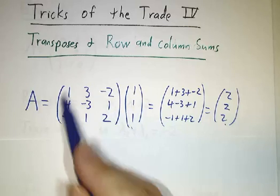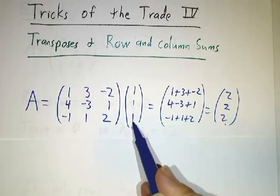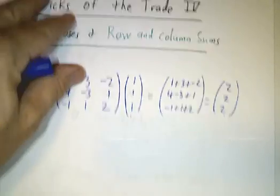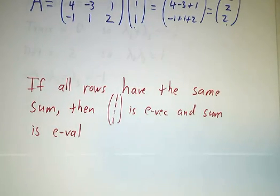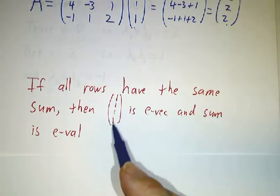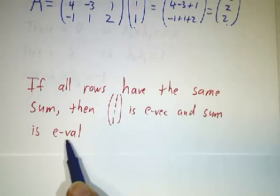If the columns had all added up to 17, then [1, 1, 1] would have been an eigenvector with eigenvalue 17. Whenever all the rows of a matrix have the same sum, then [1, 1, ..., 1] — n ones for an n×n matrix — is always going to be an eigenvector, and whatever that sum is will be an eigenvalue.